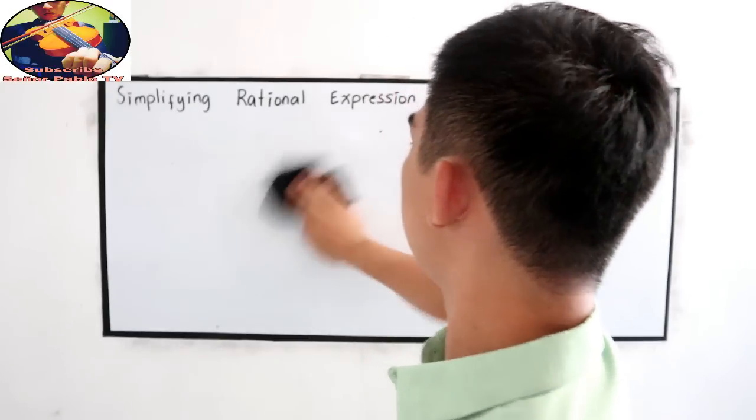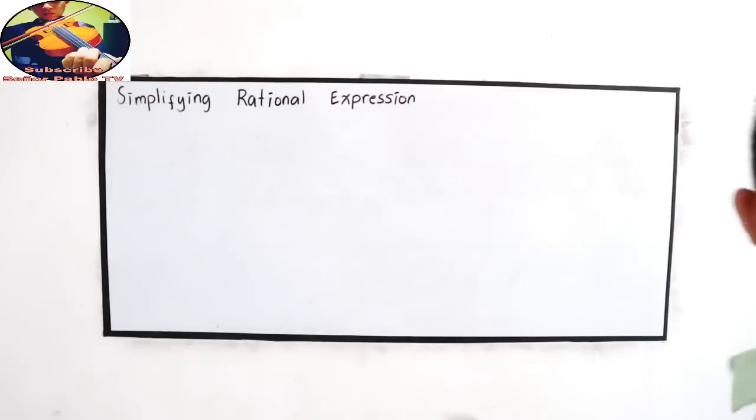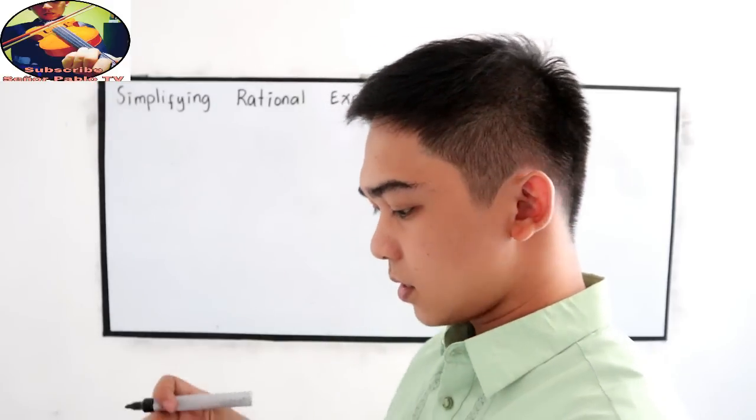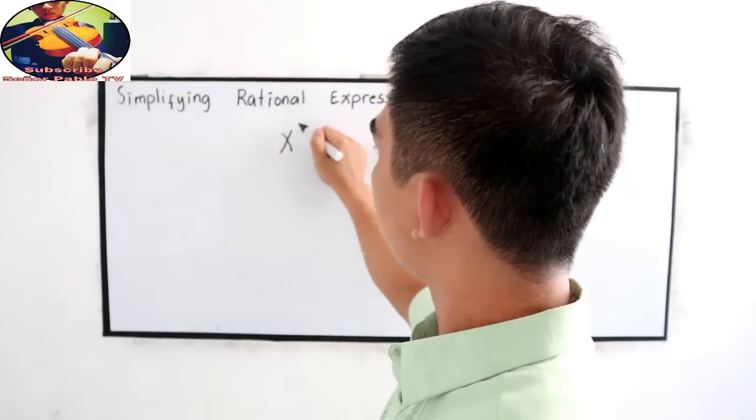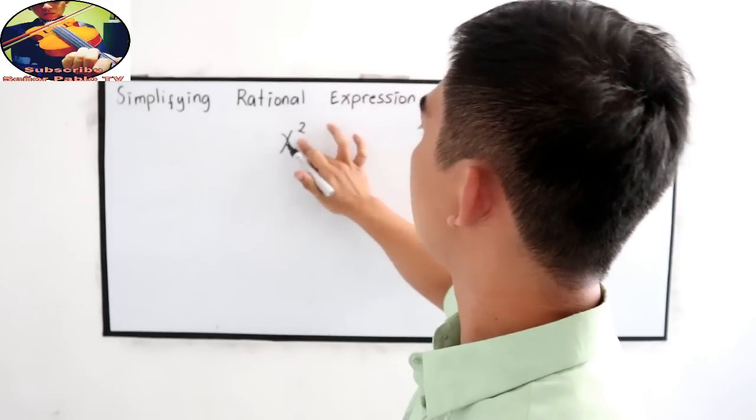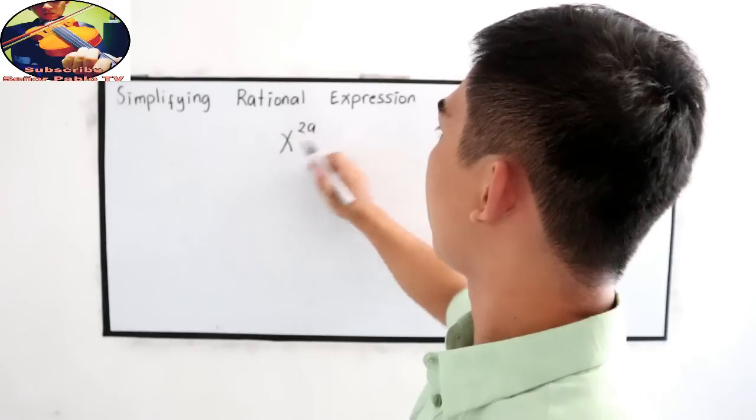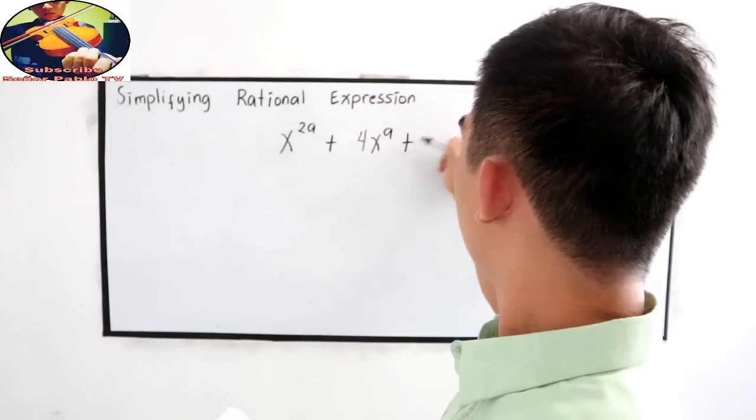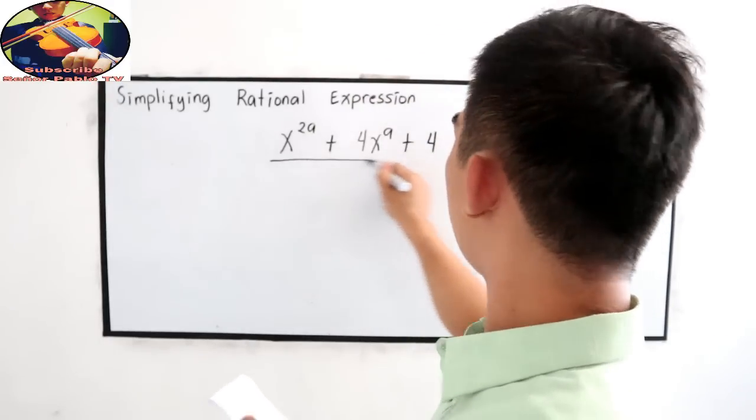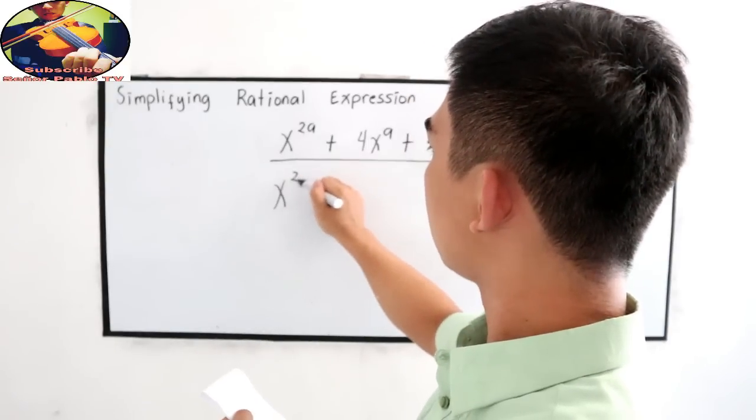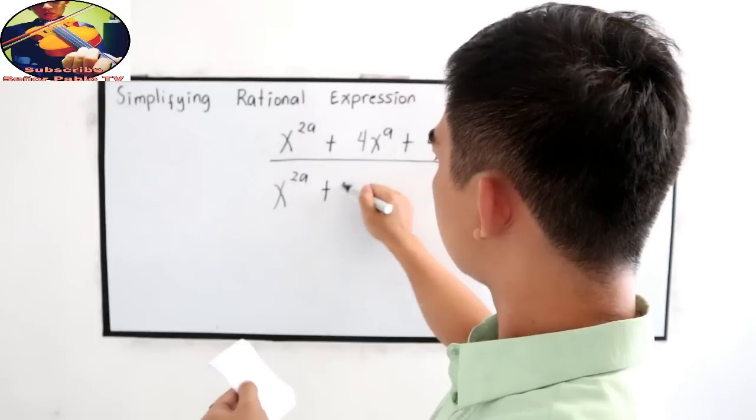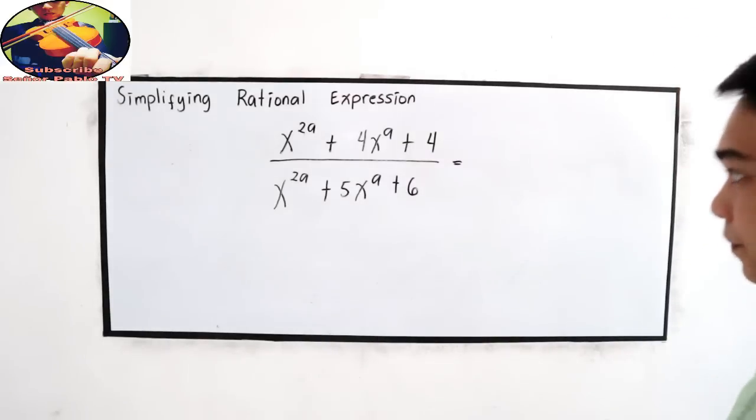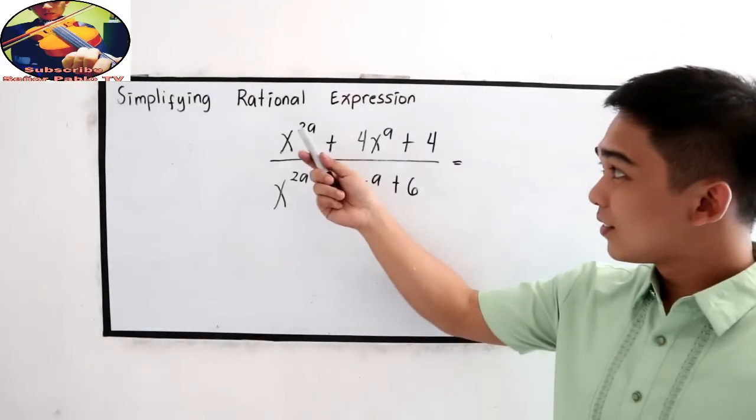Our fifth example. This is a little bit hard. X raised to 2a plus 4x raised to a plus 4 all over x raised to 2a plus 5x raised to a plus 6.